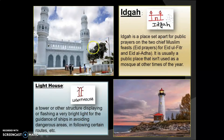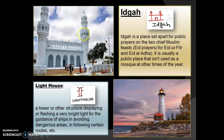Next is Idkha. Idkha is a place set apart for public prayers on the two chief Muslim festivals: Id ul Fitr and Id al Adha. It is usually a public place that isn't used as a mosque at other times of the year.